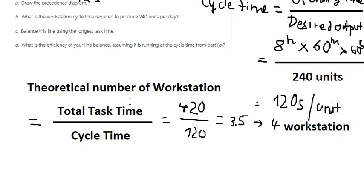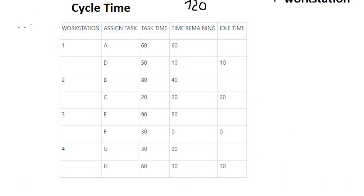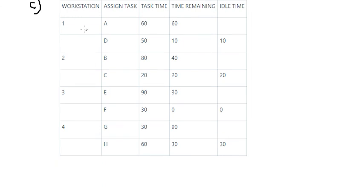Question C: Balance this line using the longest task time. Here is the answer for question C. So we need to assign about A, D for one workstation, B, C for workstation number 2, and so on. I just calculate in here for you.